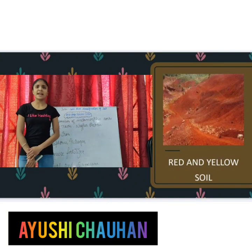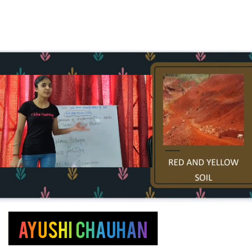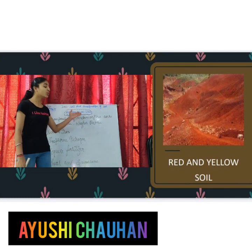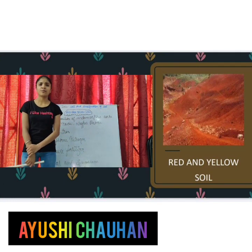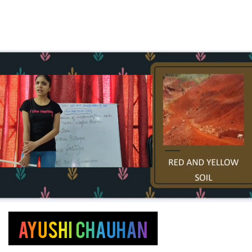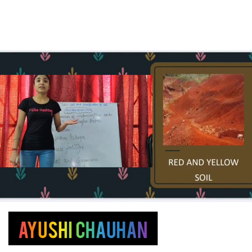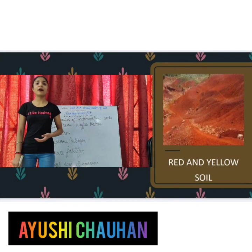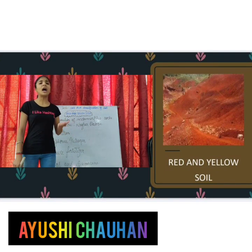Have you noticed any interesting fact about this soil? Yes — this soil is of two colors: red and yellow. So, why is it of two colors? Red: due to the high percentage of iron content. And yellow: due to the high hydrated form of iron.